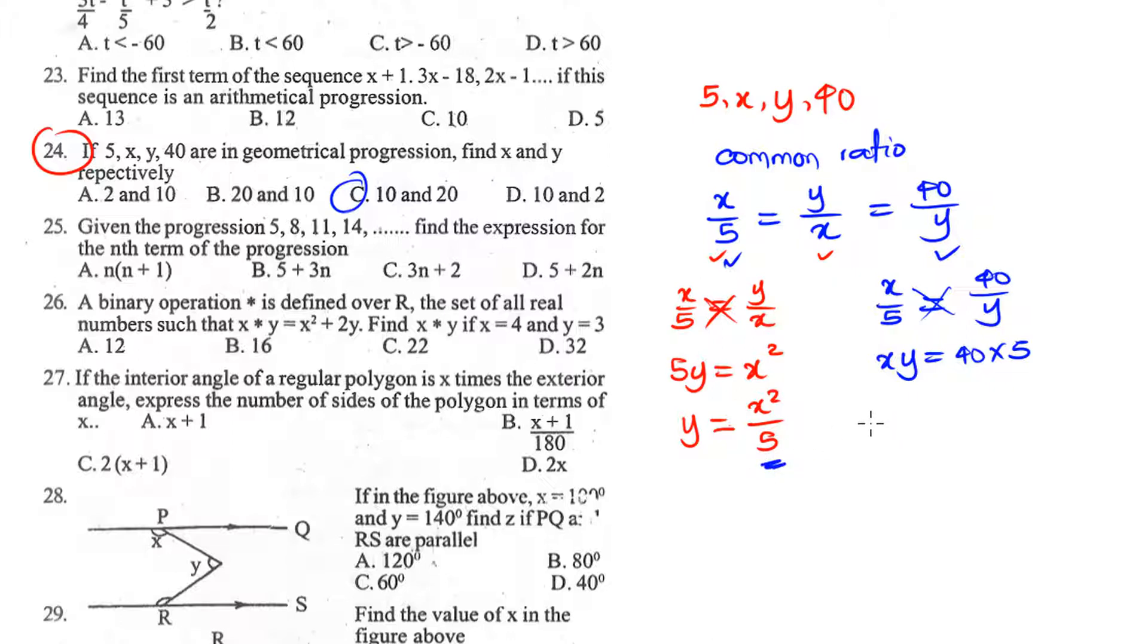But now, we know y to be x raised to power 2 over 5. So, we can say x multiplied by x raised to power 2 over 5 is equal to 200. We have x times x raised to power 2 is x raised to power 3. 5 times 200 is 1,000. Looking at 1,000, we can say x raised to power 3 is 10 raised to power 3. Since the powers are equal, then definitely the base will be equal. Therefore, our x is 10.